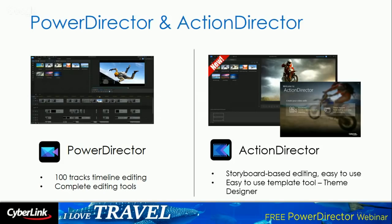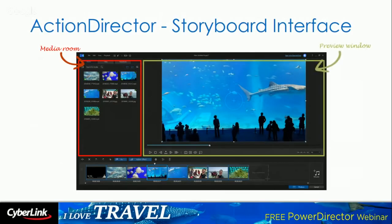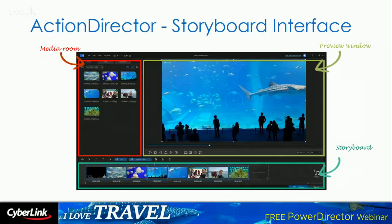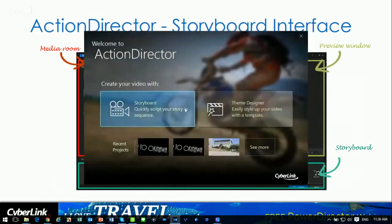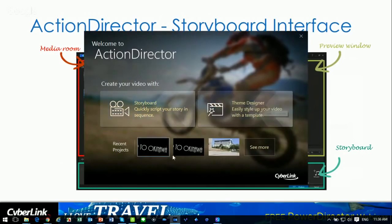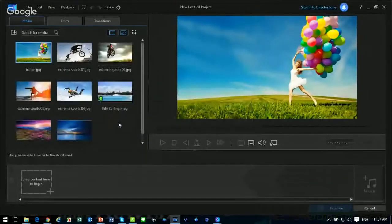PowerDirector is a timeline-based editing tool with complete editing tools including titles, transitions, particle effects, and more. For those who find PowerDirector a bit complicated, there's a new member of the family called ActionDirector, released in April at $49 — half the price of PowerDirector. ActionDirector uses a storyboard interface instead of a multi-layer timeline. You simply put videos in sequence and add background music. It also includes a Theme Designer tool. Let's launch ActionDirector to see its interface.